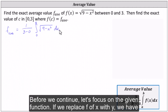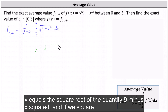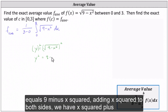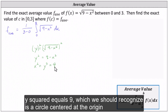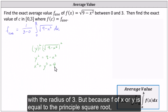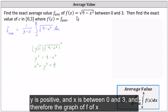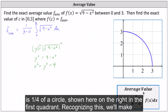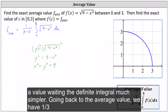Before we continue, let's focus on the given function. If we replace f(x) with y, we have y = √(9 − x²). Squaring both sides gives y² = 9 − x², and adding x² to both sides gives x² + y² = 9, which is a circle centered at the origin with a radius of three. Because y equals the principal square root, y is positive and x is between zero and three, so the graph of f(x) is one fourth of a circle in the first quadrant. Recognizing this will make evaluating the definite integral much simpler.